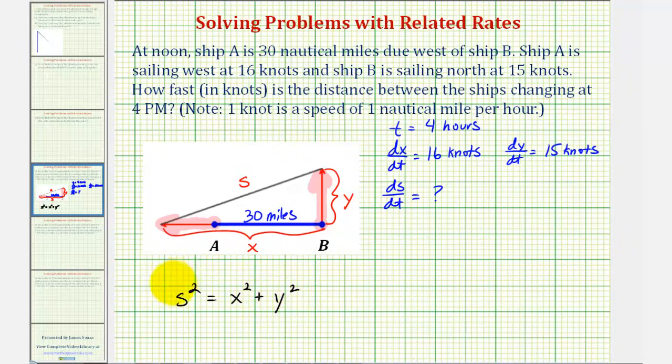Before we differentiate this with respect to T, though, let's determine some more information. Let's find X, Y, and S when T equals four. When T equals four, X would be equal to this distance here, which would be 30 miles, or 30, plus the rate of change times the time.